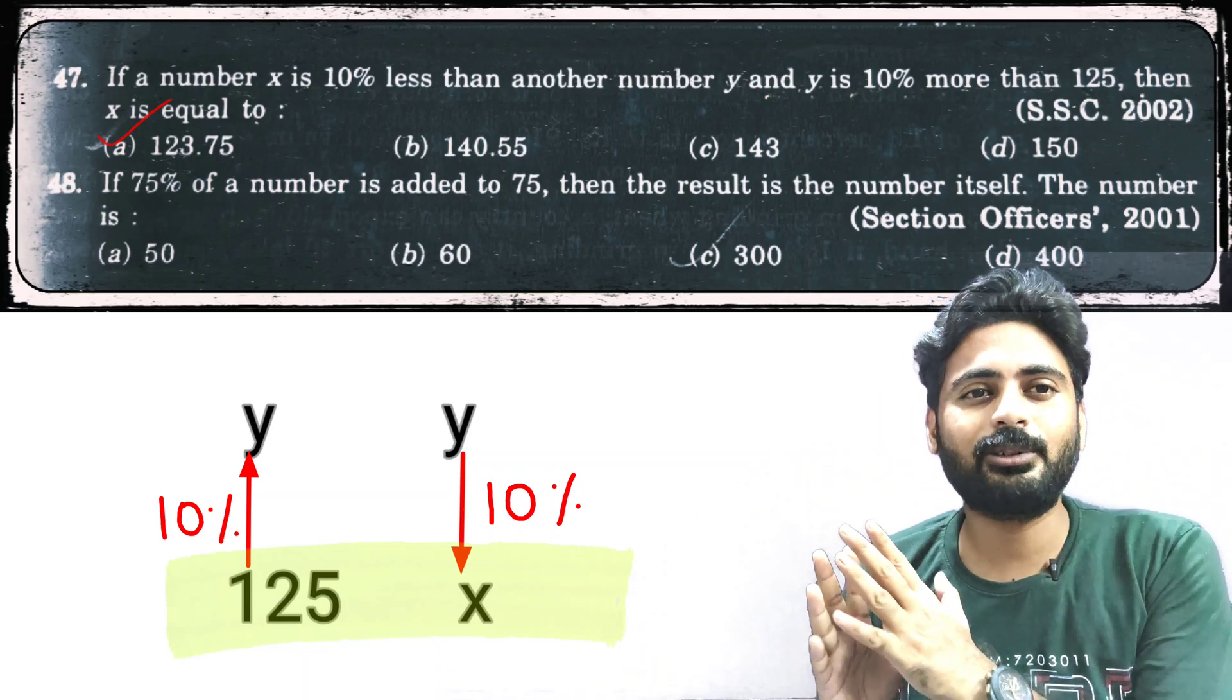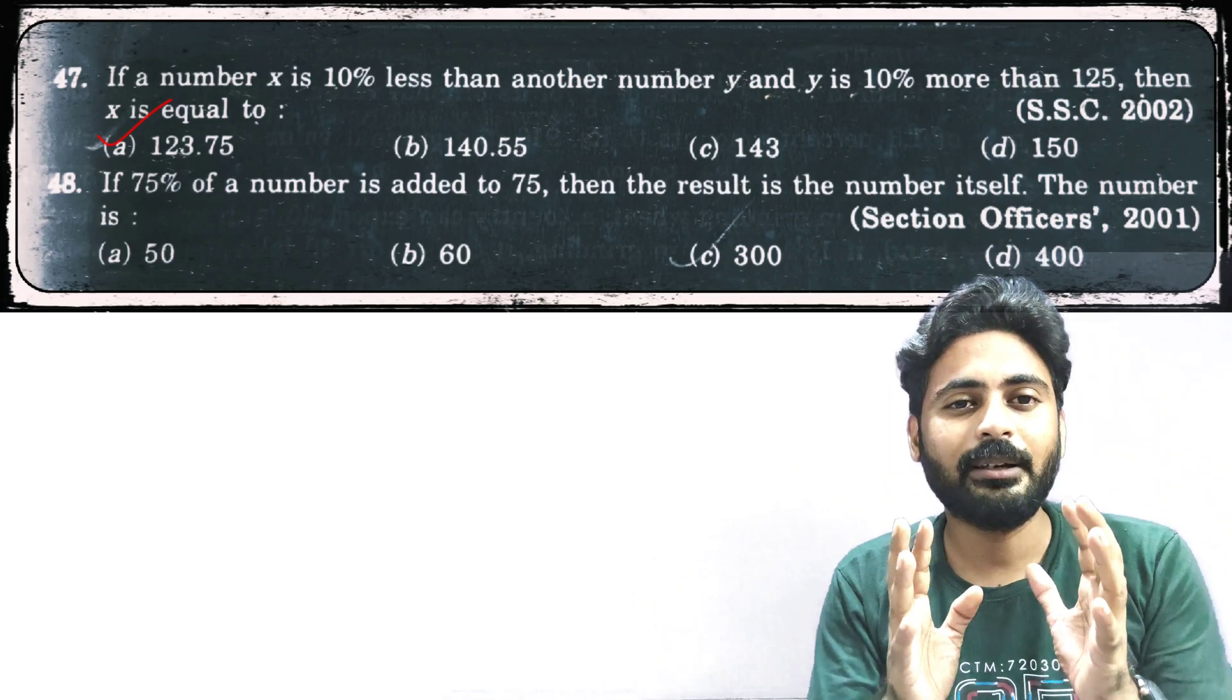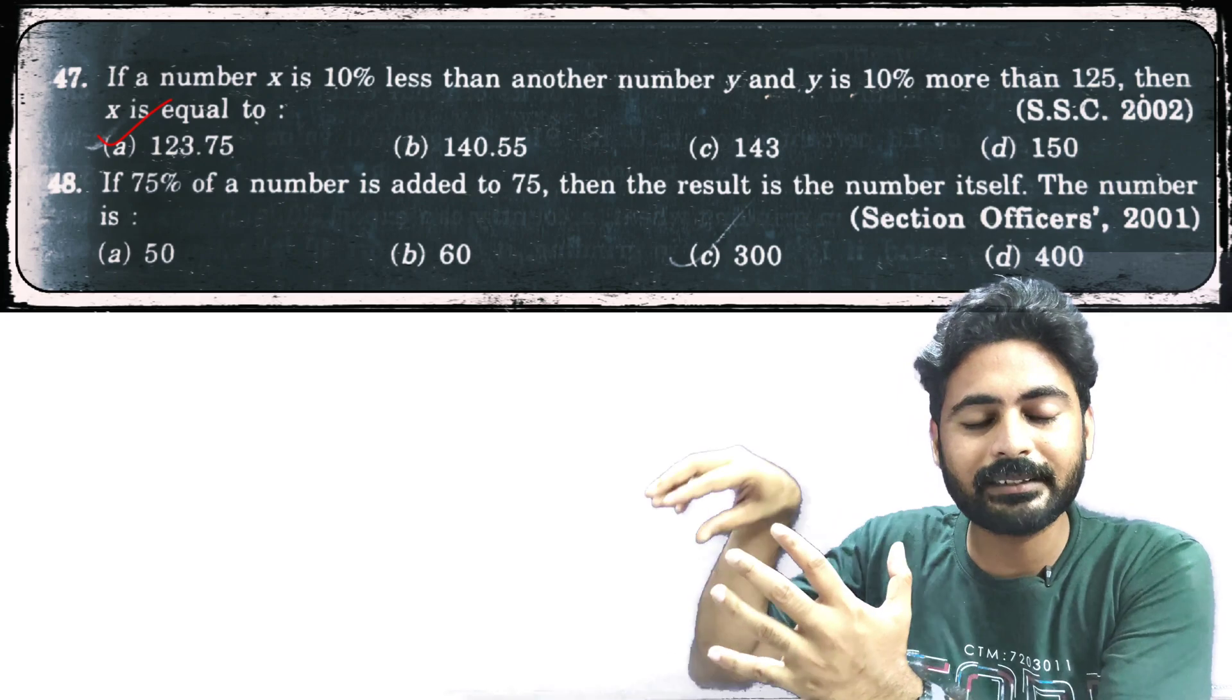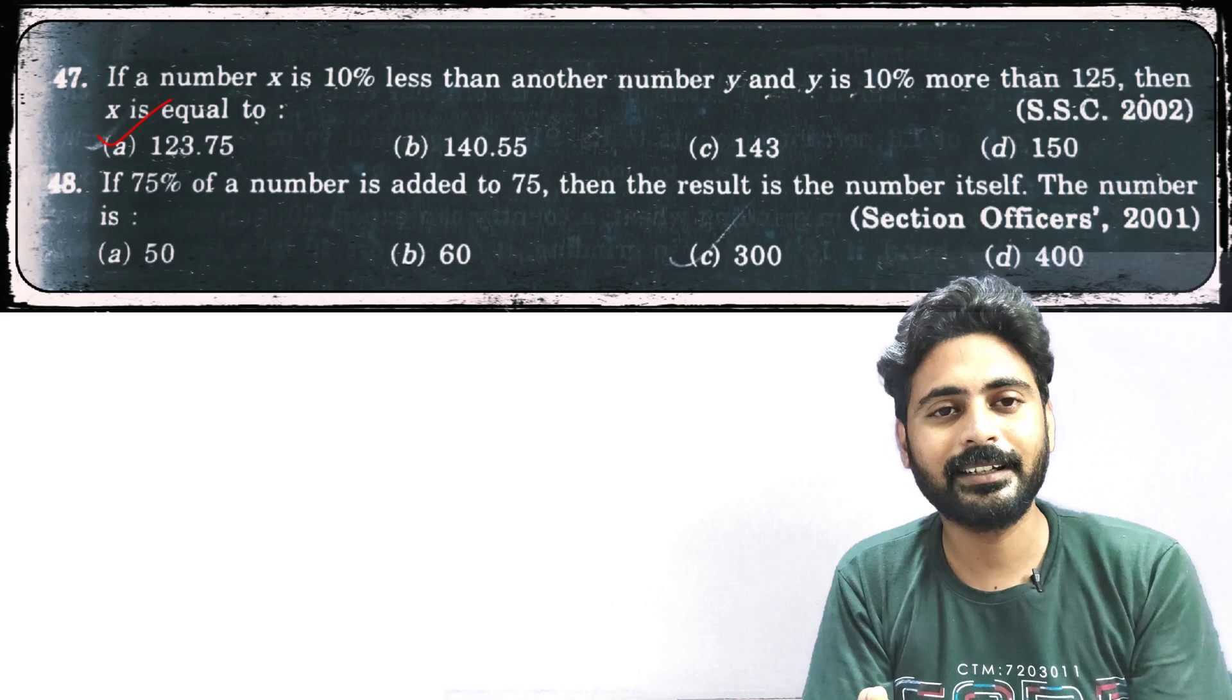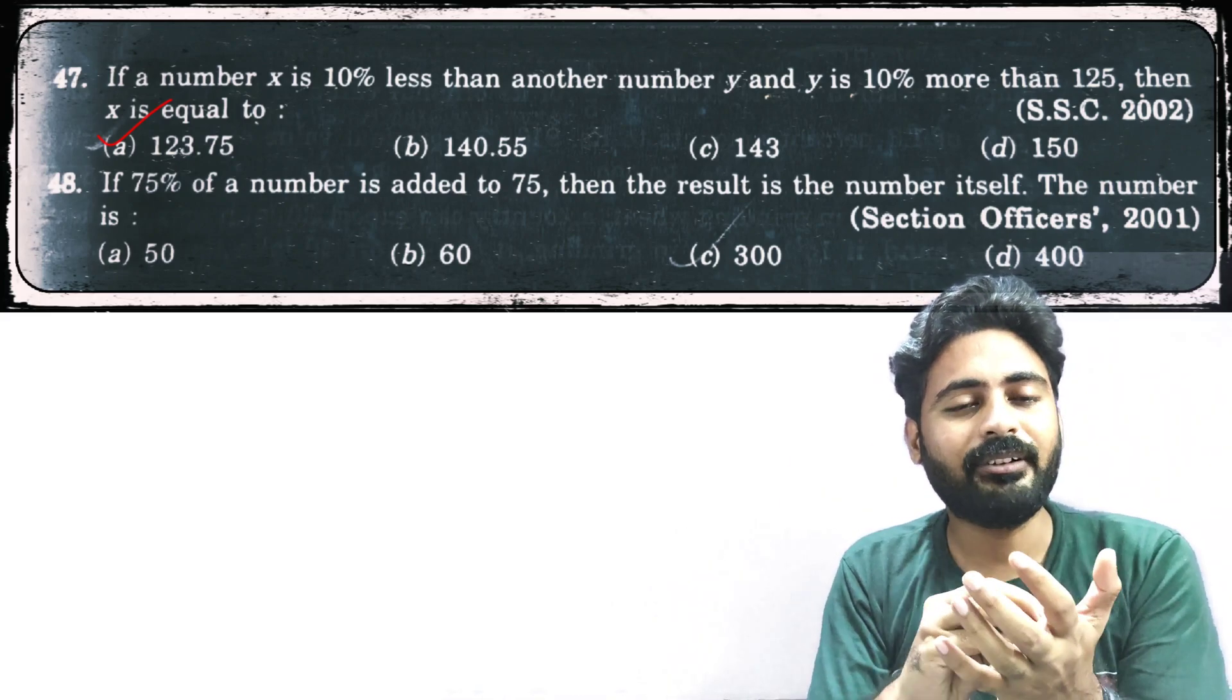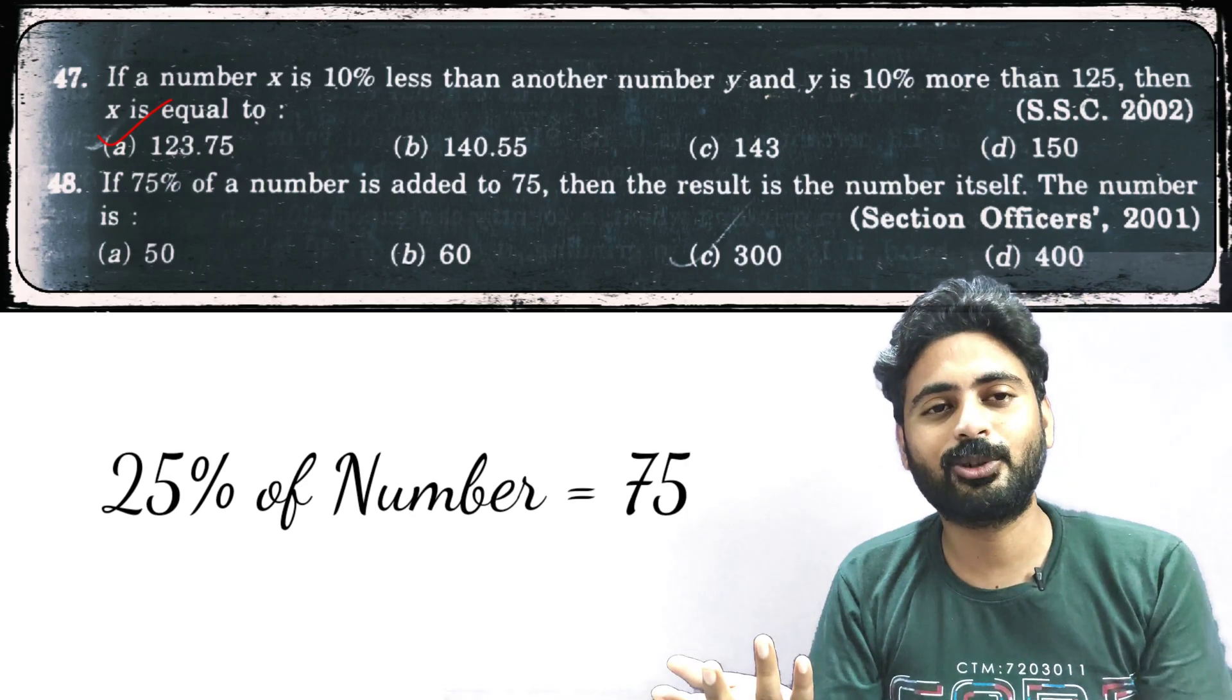Now, let's take a look at the second question. 75% of a number - you take 75% of a number and add 75 to this, it becomes the same number. What does it mean? You are adding 25% of the number, right? And 25% of the number is 75. Then what is the total number?